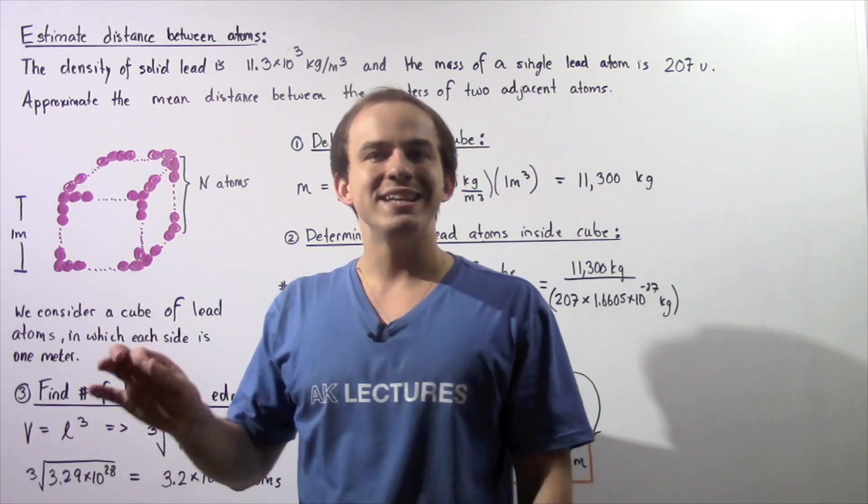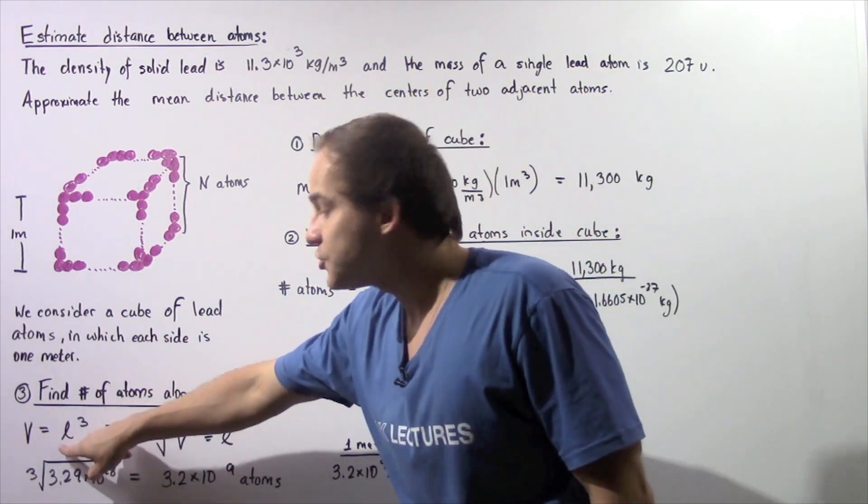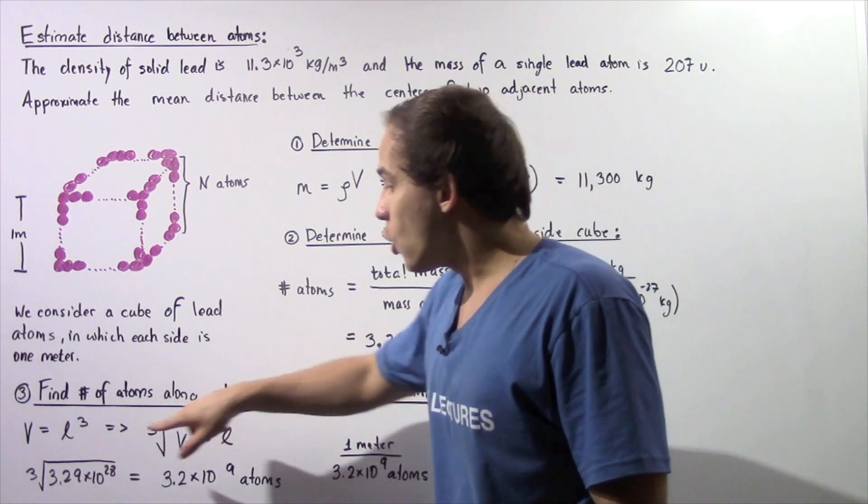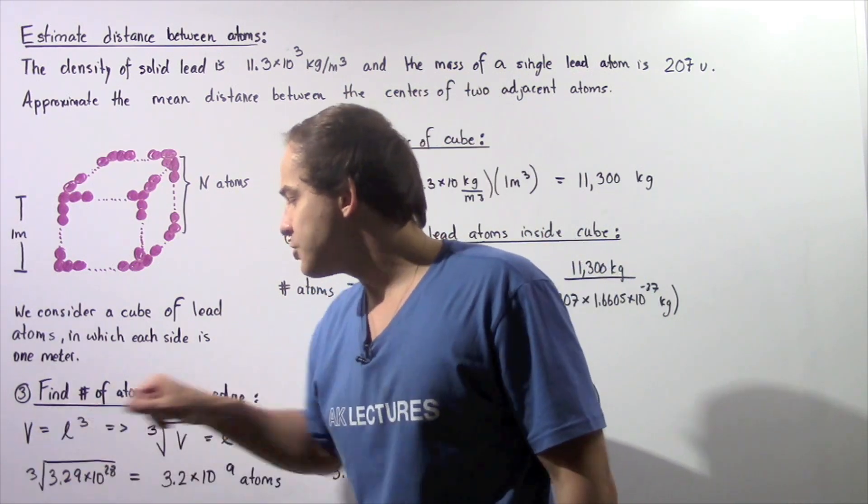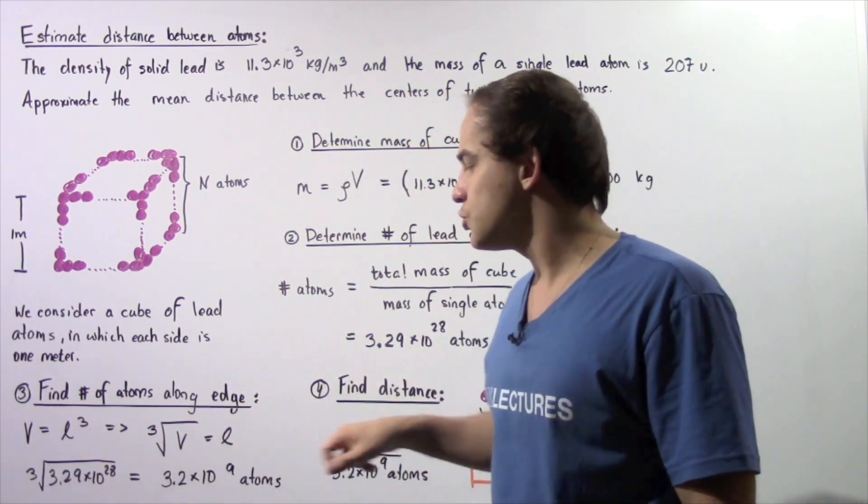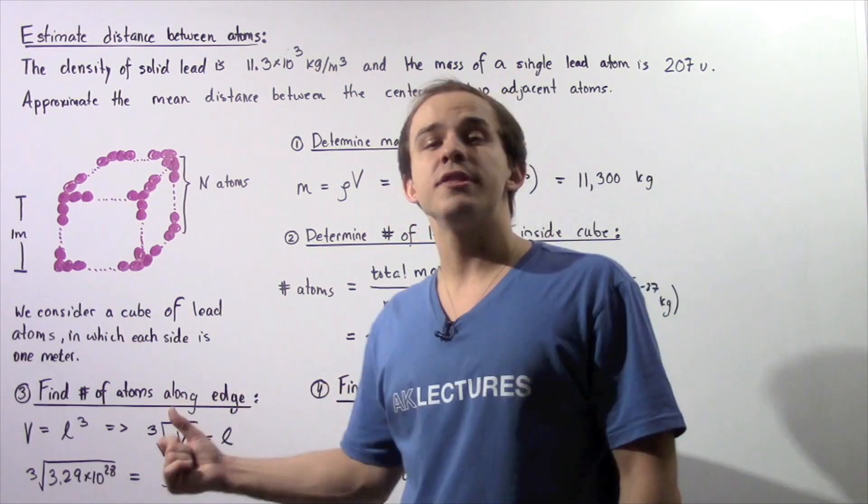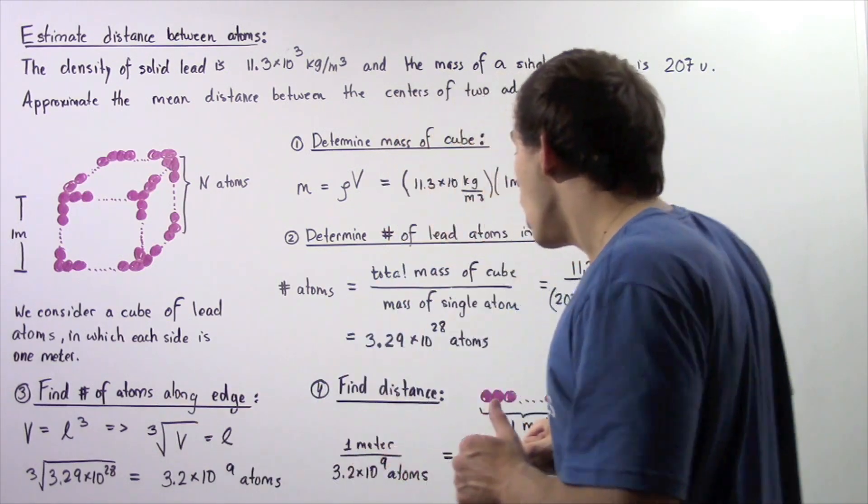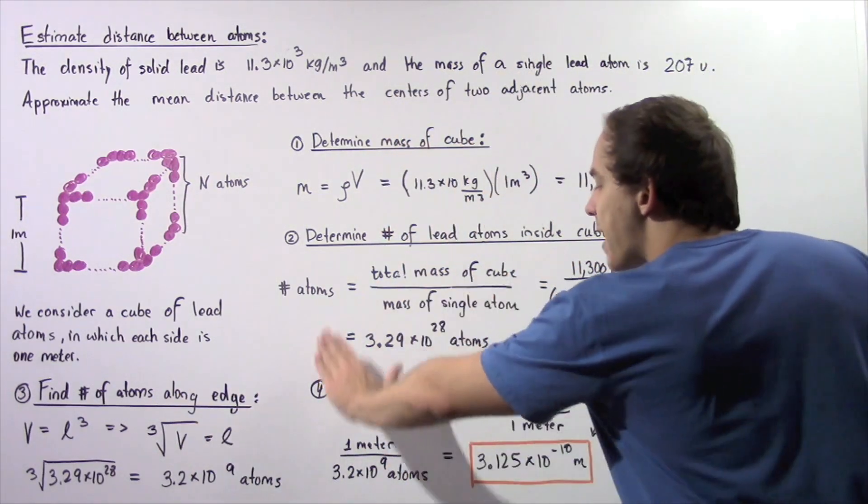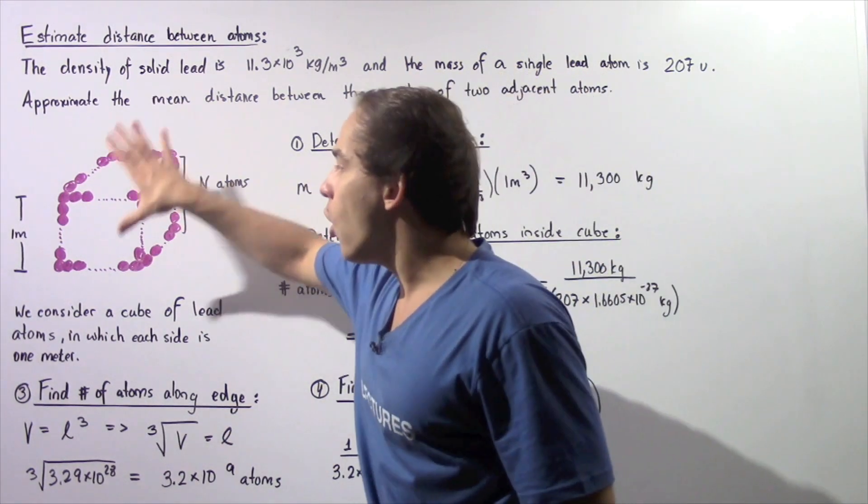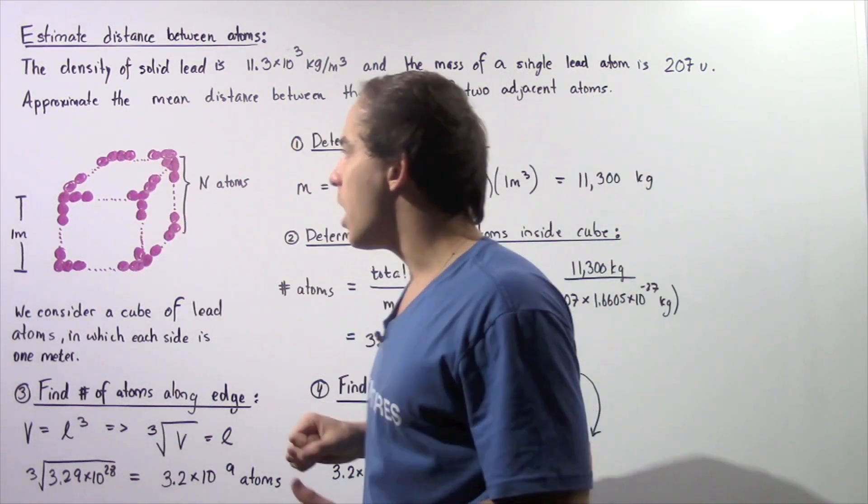So recall that volume is equal to the edge L cubed. So if we rearrange this equation, we see that L is equal to the cube root of the volume.